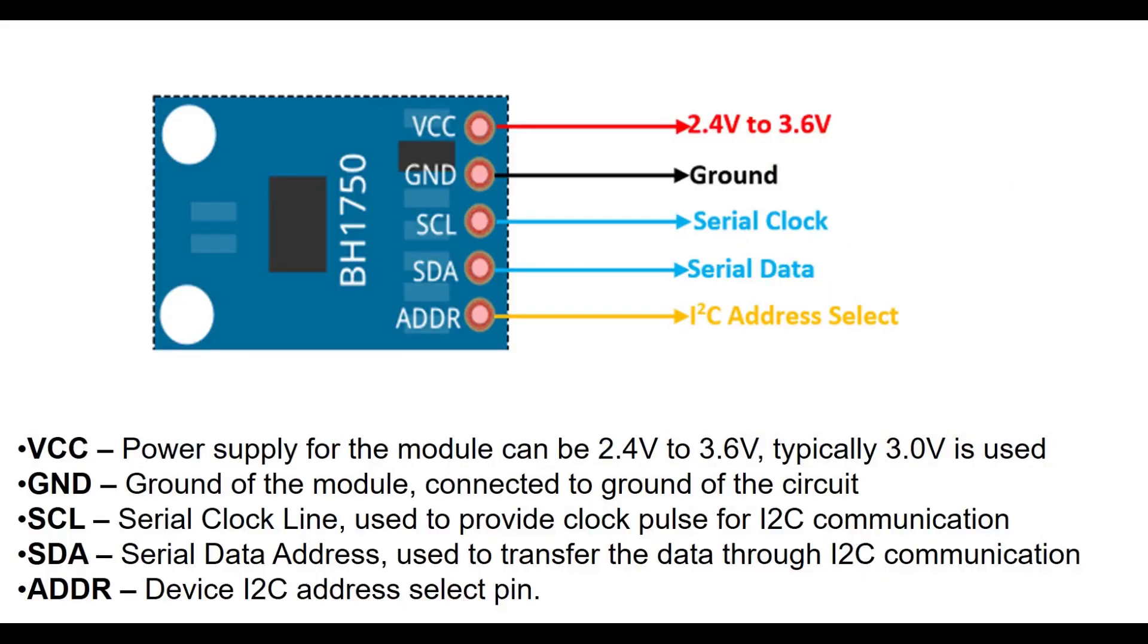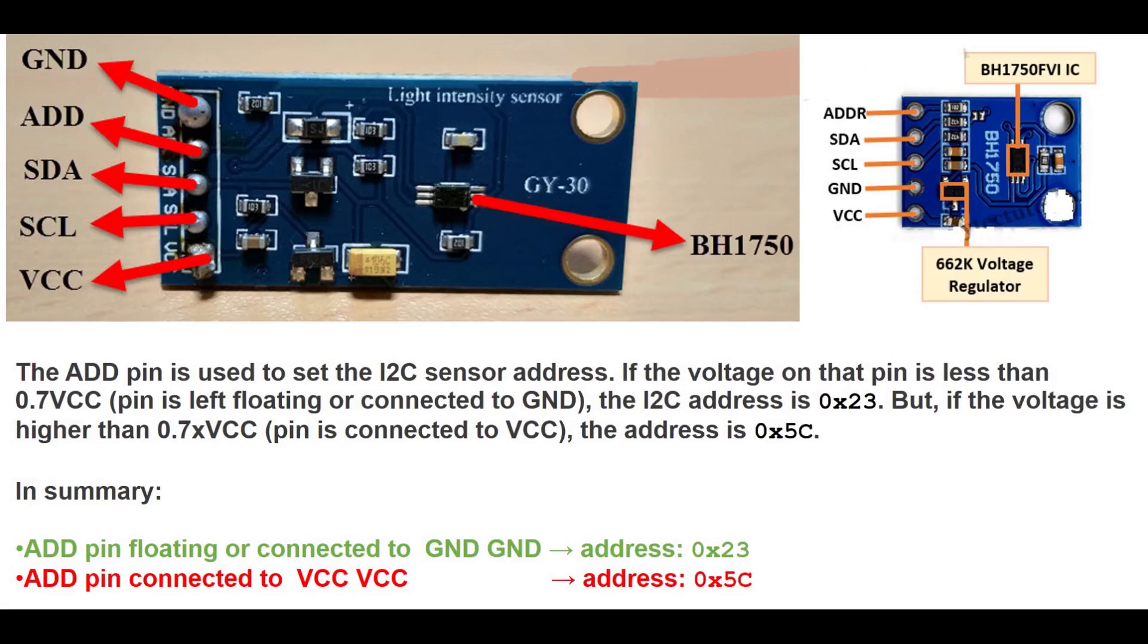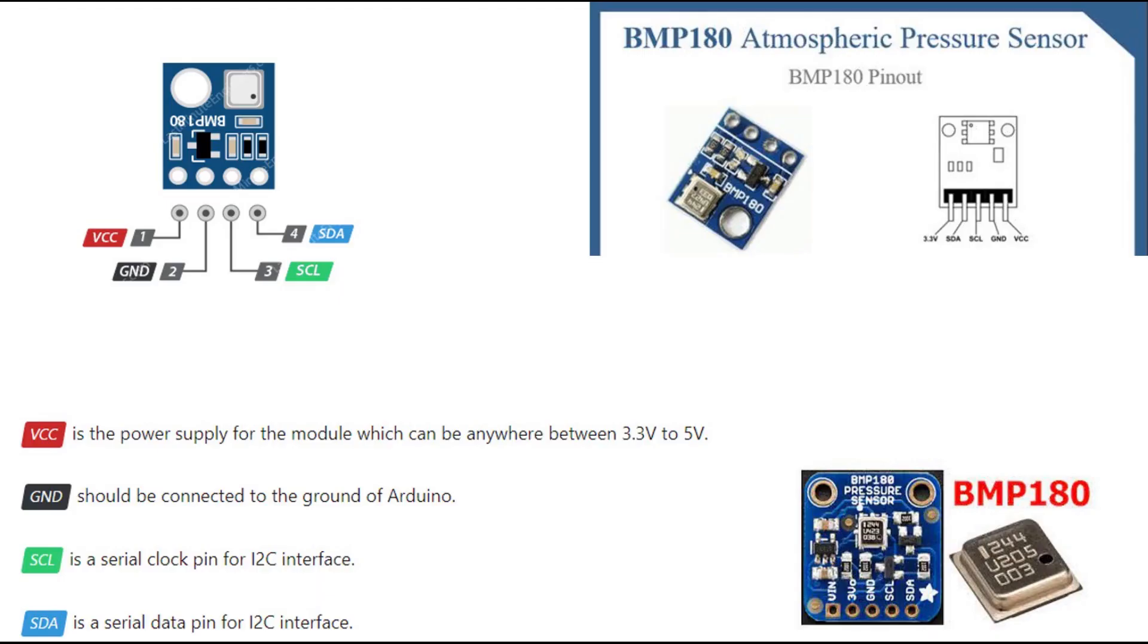The BH1750 ambient light sensor is used in areas where there is need to monitor the intensity of light, for example, adjusting the brightness of display in mobiles and LCD displays, street lights, and for turning car headlights on or off depending on outdoor lighting. The BH1750 is a 16-bit ambient light sensor that communicates via I2C protocol. It outputs luminosity measurements in lux, SI-derived unit of illuminance. It can measure a minimum of 1 lux and a maximum of 65,535 lux.